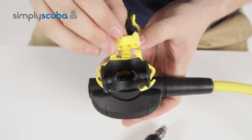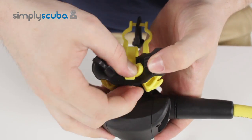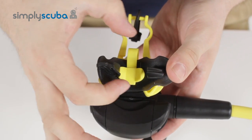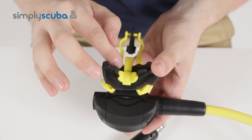and then this section here, what that does is you push that into the opening and that blocks the opening and stops any crud or debris from entering that second stage.